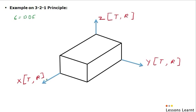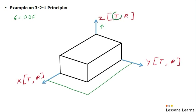With the 3-2-1 principle, first we have to define the primary plane. While defining the primary plane, the first thing we have to understand is which is the biggest surface of this block. We can see this top face is the biggest surface — similarly the bottom face. So the biggest surface should be selected as the primary plane. When we consider this as the primary plane, this part cannot move up — translation in Z is locked. Also, this part cannot rotate in X because this face is locked, so rotation in X is locked. Similarly, the part cannot rotate in Y — rotation in Y direction is also locked.